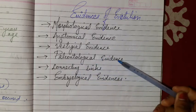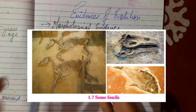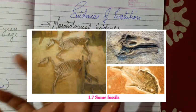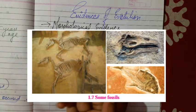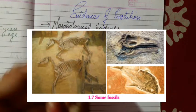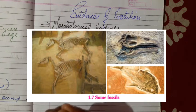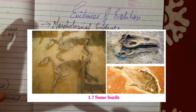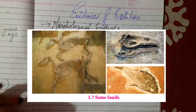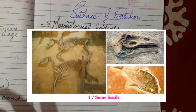The next is paleontological evidence, which refers to ancient evidence. Various animals and organisms that lived millions of years ago, after dying, got buried inside the soil. When we dig them up, we find them in the form of fossils. For example, we know dinosaurs existed because of fossils. These fossils are very important for studying the evolution of organisms.